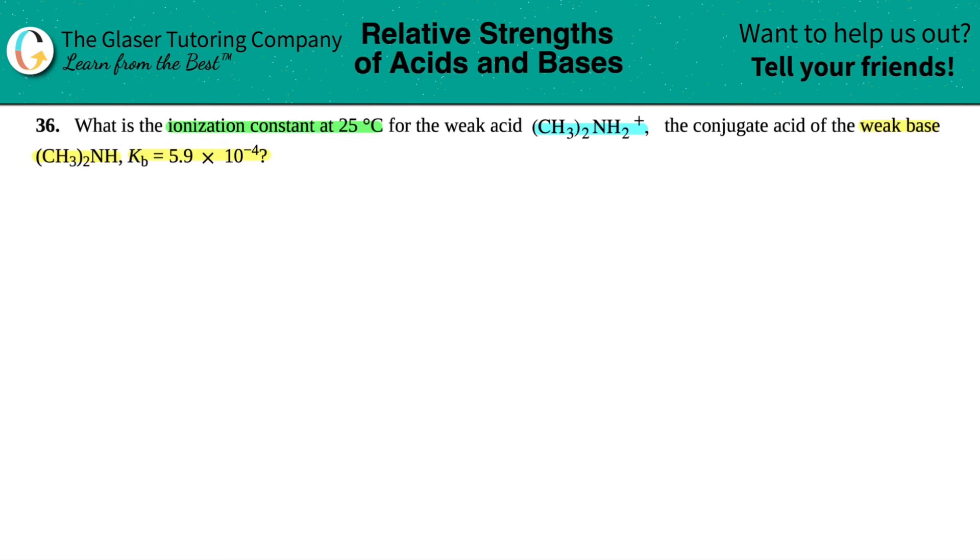So we're looking for the ionization constant. Any ionization constant is capital K. In this case they gave us an ionization constant, capital K, for a base. That's why there's a B there.